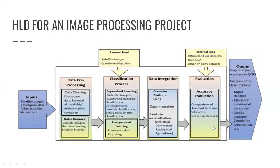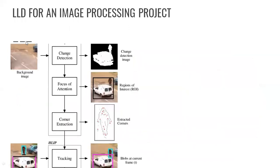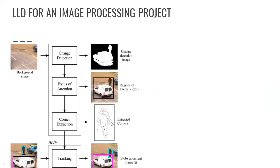Now this is what low-level design looks like — for every component you go into detail. For example in preprocessing, what model is used, what technique is used, what is the detailed explanation. LLD for an image processing project: consider background change detection, change detection image, regions of interest, focus of attention, corner extraction, then tracking blobs at the current frame. You are going into depth of each stage, analyzing the result in depth — this is the low-level design phase, the detailed explanation phase.